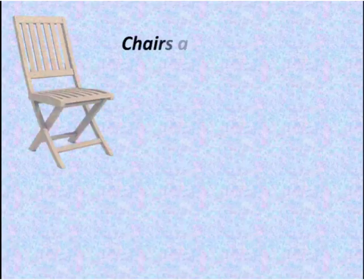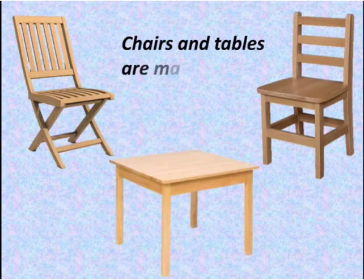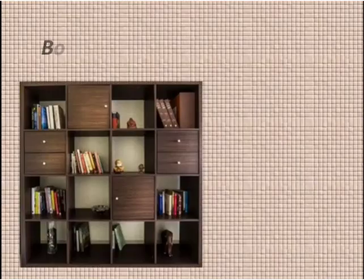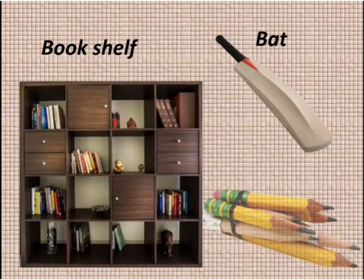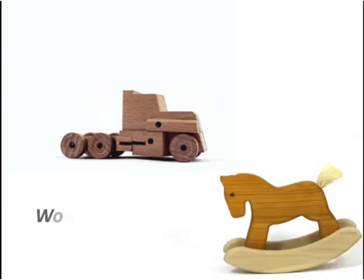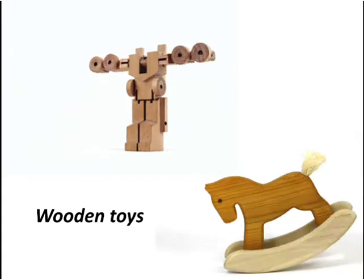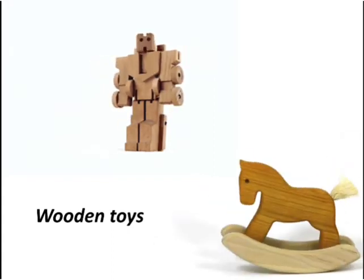Chairs and tables are made up of wood. Bookshelf, cricket bat, pencils and wooden toys are also made up of wood.